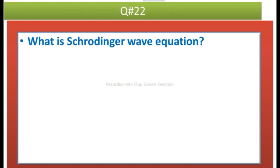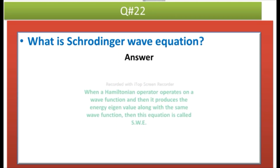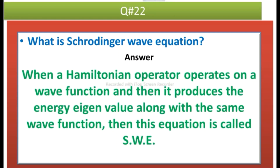The next question is: what is the Schrödinger wave equation? Answer: when a Hamiltonian operator operates on a wave function and produces the energy eigenvalue along with the same wave function, then this equation is called the Schrödinger wave equation.